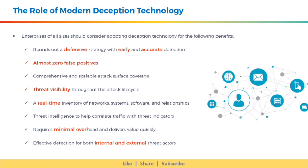Enterprises of all sizes should consider adopting deception technology for the following benefits: it rounds out a defensive strategy with early and accurate detection; there are almost zero false positives; it provides comprehensive and scalable attack surface coverage; provides threat visibility throughout the attack life cycle; provides a real-time inventory of networks, systems, software, and relationships; uses threat intelligence to help correlate traffic with threat indicators; requires minimal overhead and delivers value quickly; and provides effective detection for both internal and external threat actors.